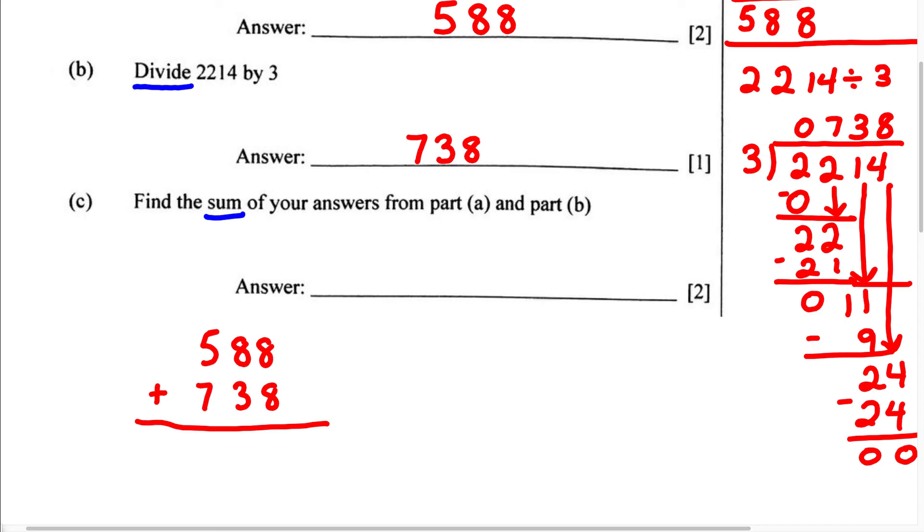Now 8 plus 8 is 16, we're going to write the 6 and carry the 1. 1 plus 8 is 9, 9 plus 3 is 12, so we're going to put the 2, carry the 1. Now we have 1 plus 5, that's going to give us 6. 6 plus 7 is going to give us 13. Therefore, our answer for this problem is going to be 1,326.